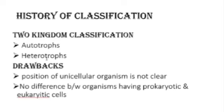However, there were drawbacks in this classification system. Some unicellular organisms had no clear position — for example, Euglena-like organisms don't have a proper place, because when they prepare their food they are autotrophs, but when they cannot prepare food they are heterotrophs.